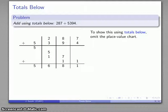And if I want to show this using the totals below, the only thing I'm going to change is I'm going to omit the place value chart, and there's my answer.